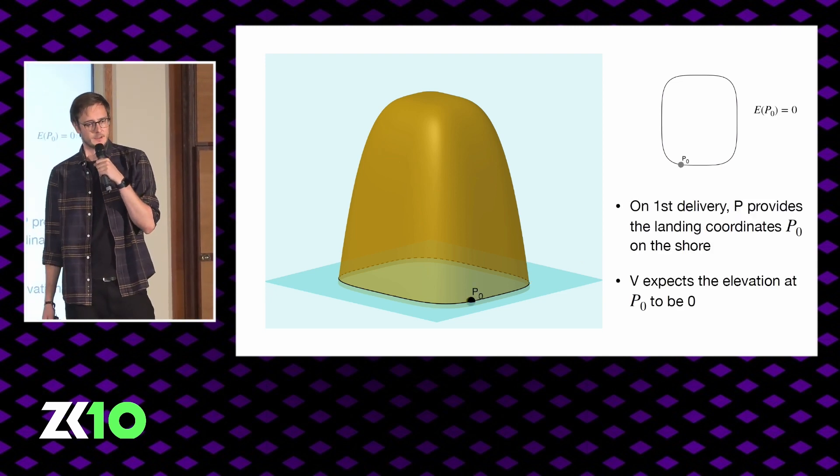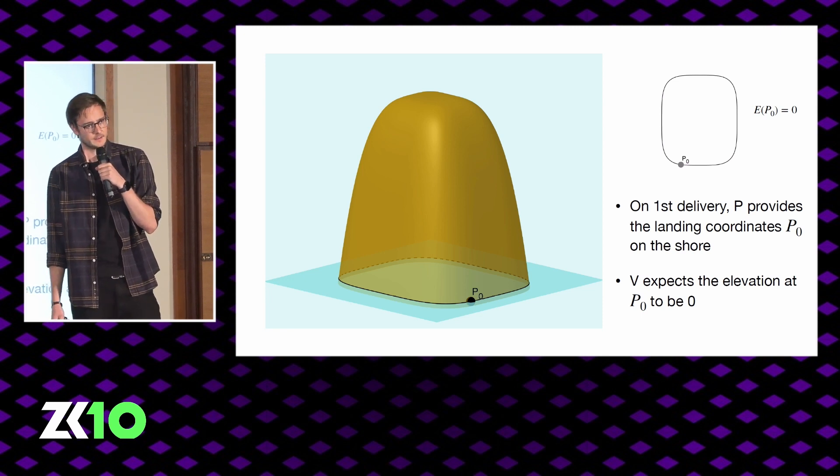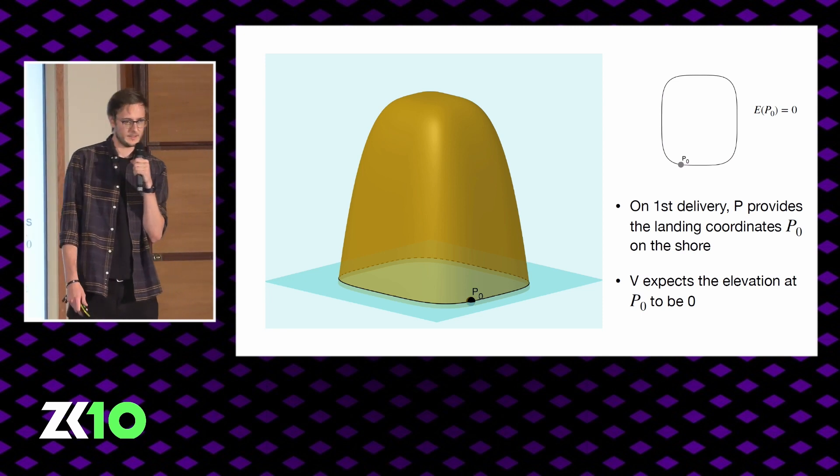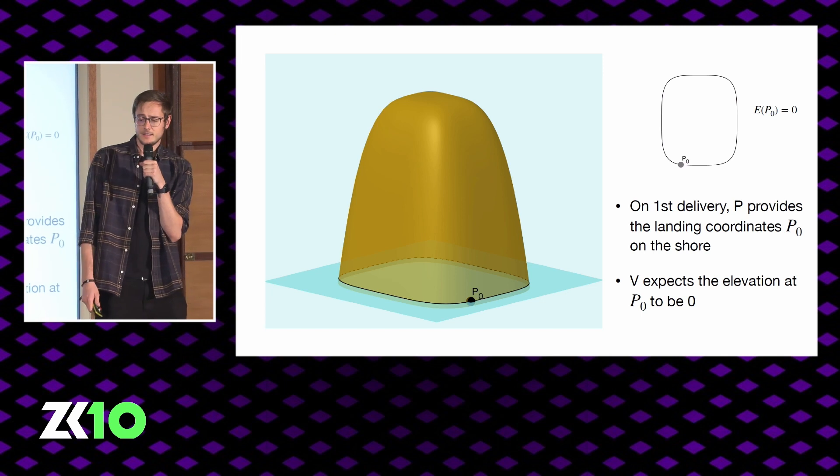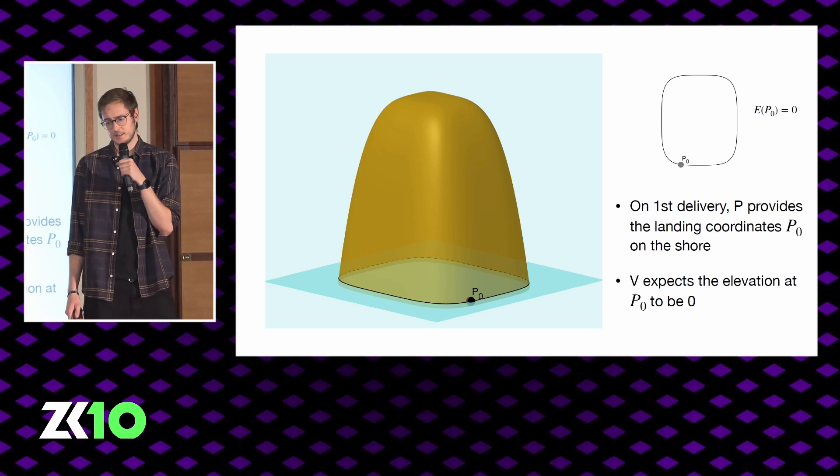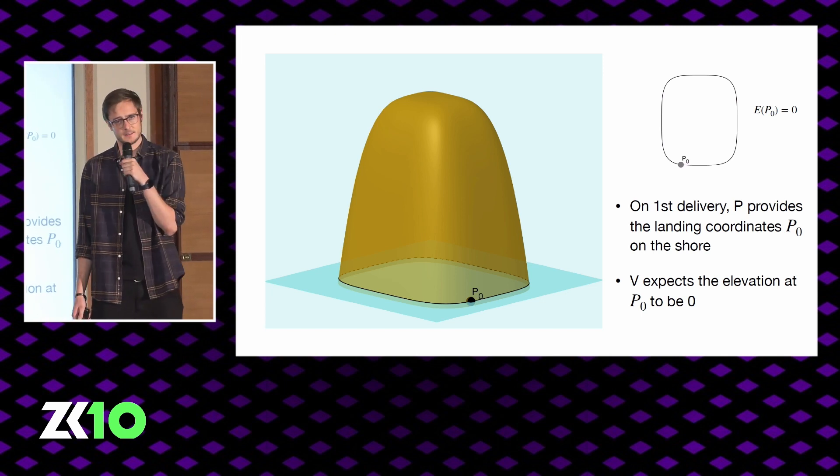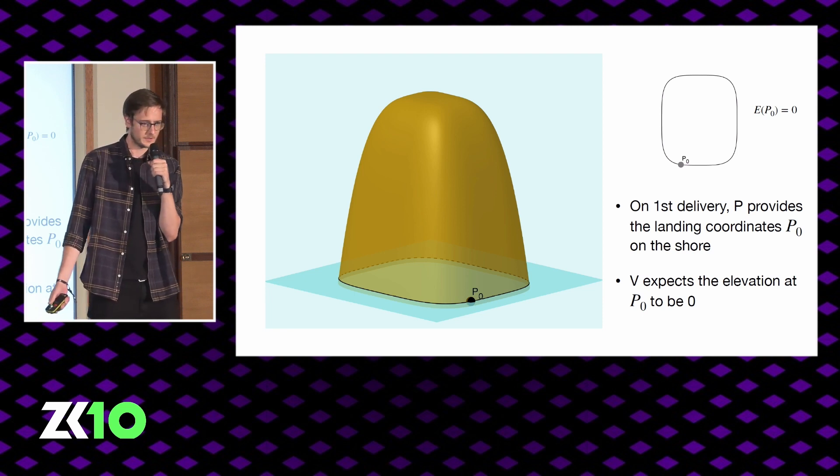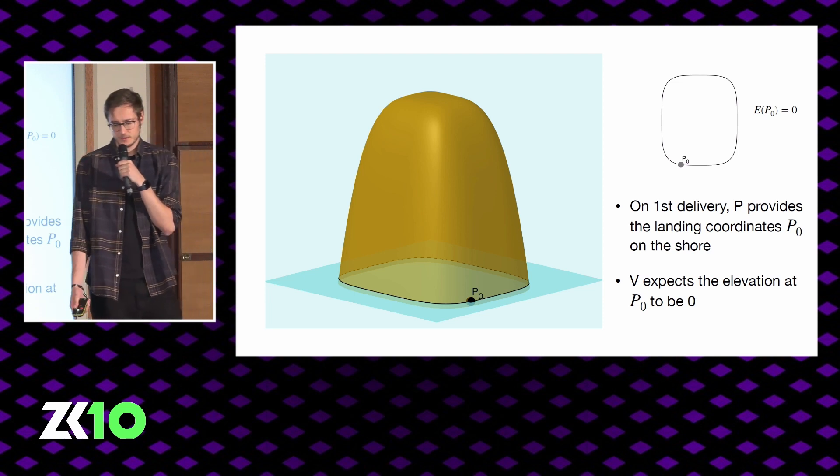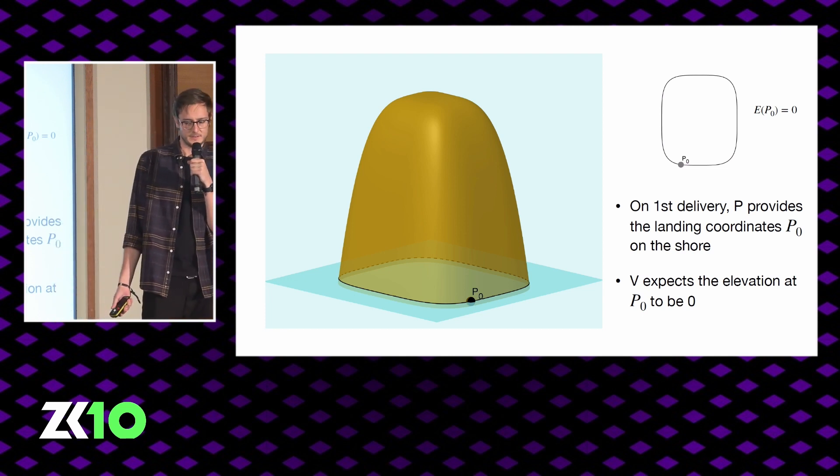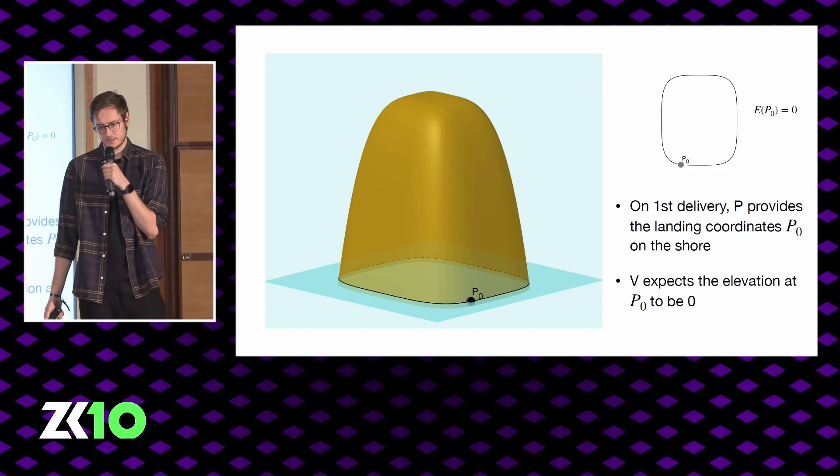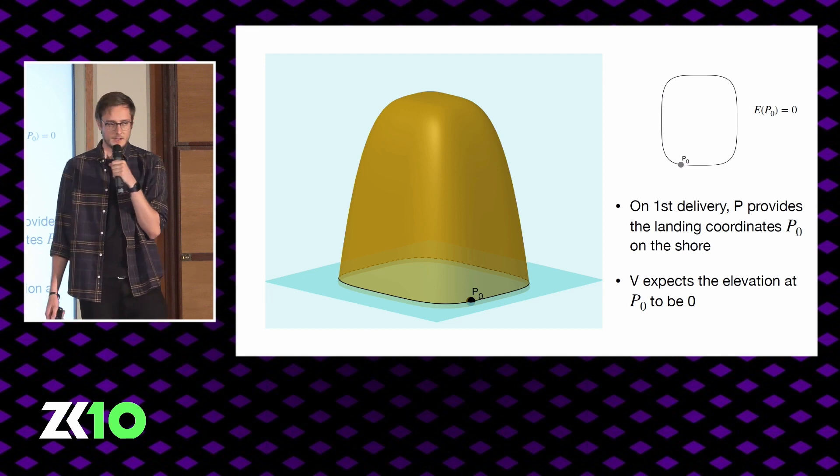On the first delivery, the prover is going to get to the island and he lands at a specific point P0. He's going to note these coordinates, pick his fruit, and then sail back to the mainland. He sells the fruit to the verifier and gives him the coordinates. Because he landed on the shore, we expect the elevation of this point to be 0. So the verifier just writes it down and he's able to map the point on his 2D map.